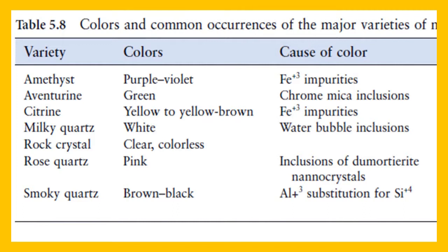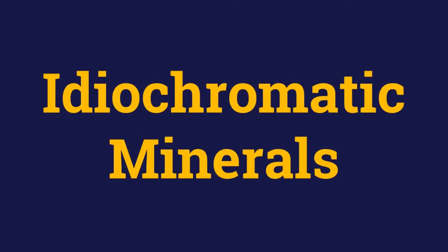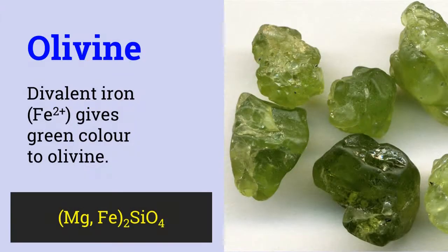The reason for the variation in color of a mineral is as varied as the color of the mineral itself. But broadly, the color observed may be the mineral's true color or it may be colored by some other elements. On this basis, minerals can be idiochromatic where the coloring element is also a major constituent of the mineral. An example of an idiochromatic mineral is olivine where the green color comes from trivalent ferrous iron.